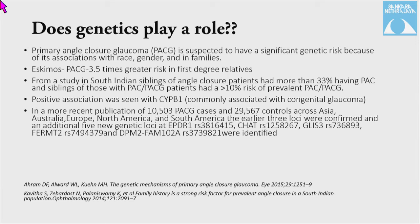Eskimos have a 3.5 times greater risk in first-degree relatives. In South Indian siblings, more than 33% have primary angle closure, and siblings of PAC or PACG patients have more than 10% risk of PAC and PACG. A positive association has been seen with the CYP1B1 gene. In a recent publication of about 10,000 PACG cases and 30,000 controls across Asia, Australia, and North America, three loci were previously confirmed and five new genetic loci have now been confirmed.